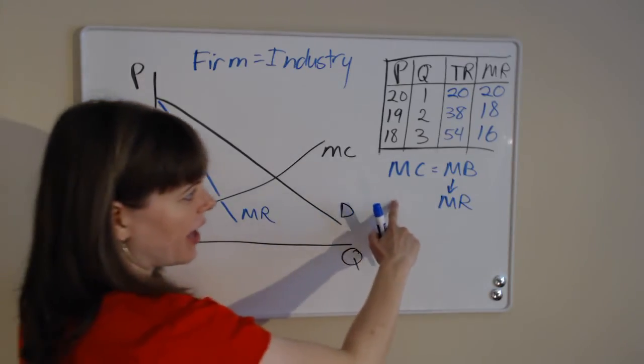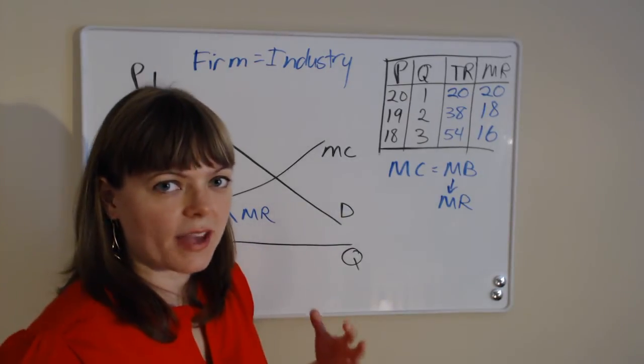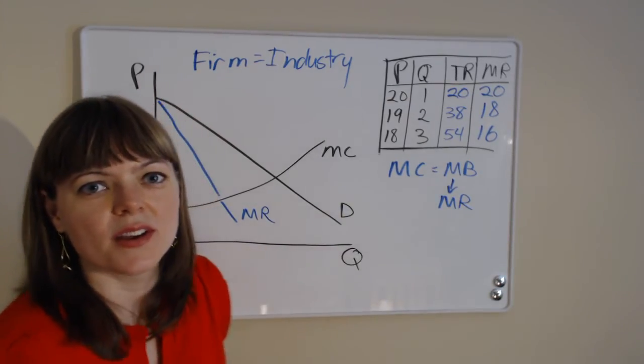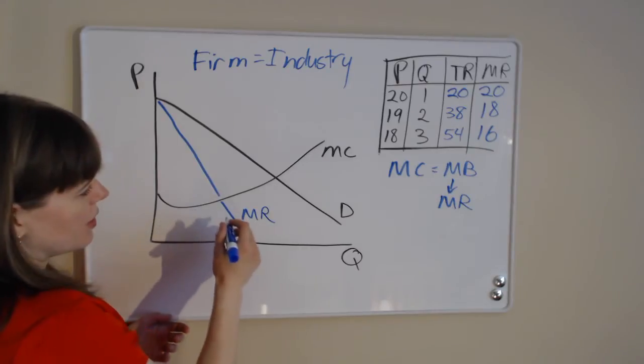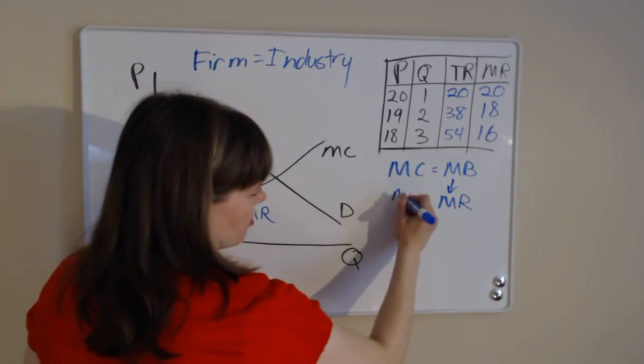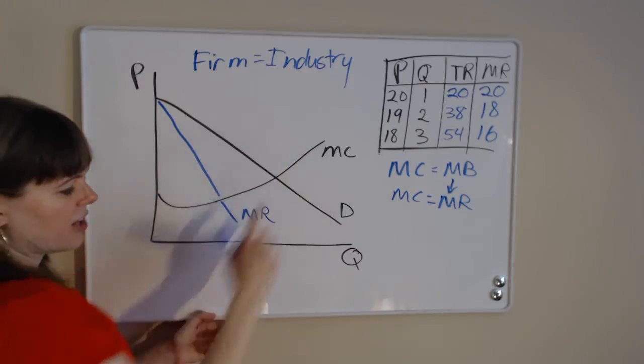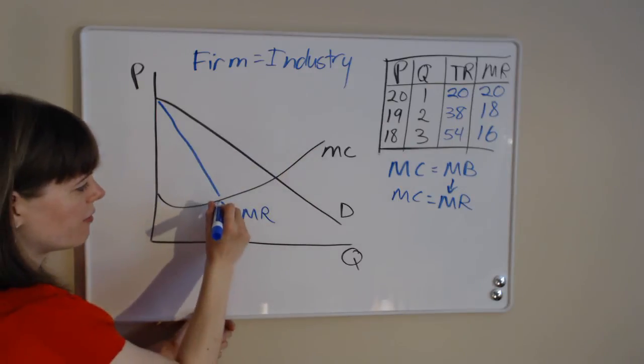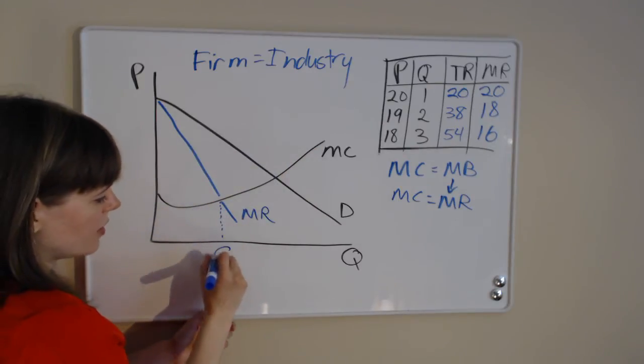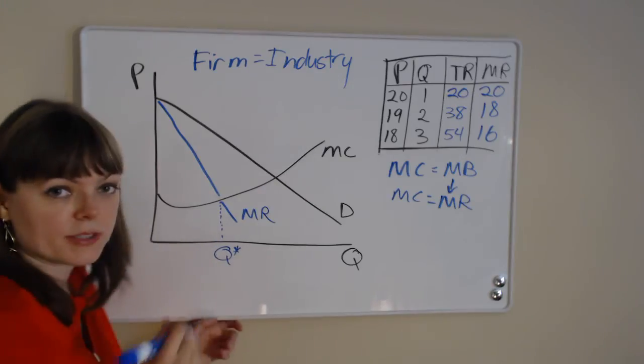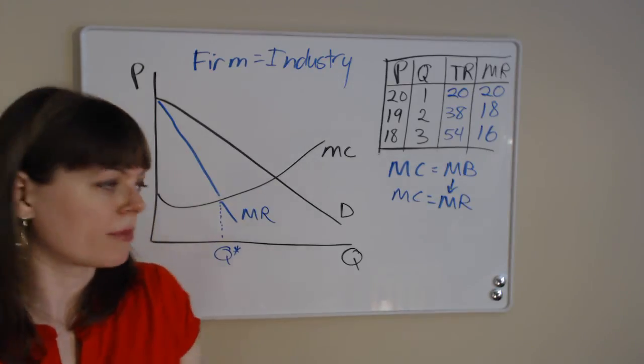So now we're going to apply our rule to decide the quantity of cupcakes that this firm is going to produce. And we know the quantity should happen when marginal cost equals marginal revenue. So we can find our marginal cost curve and our marginal revenue curve. And the quantity where those meet is going to be the optimal quantity for a monopolist to produce.